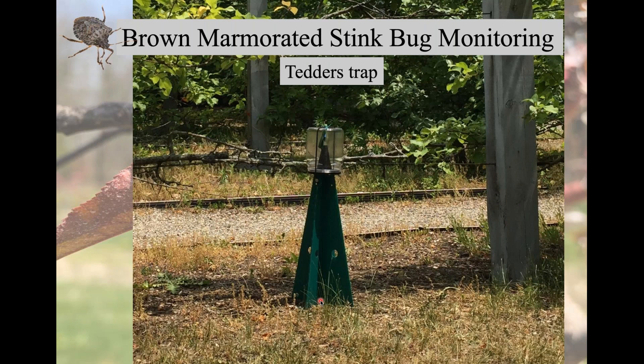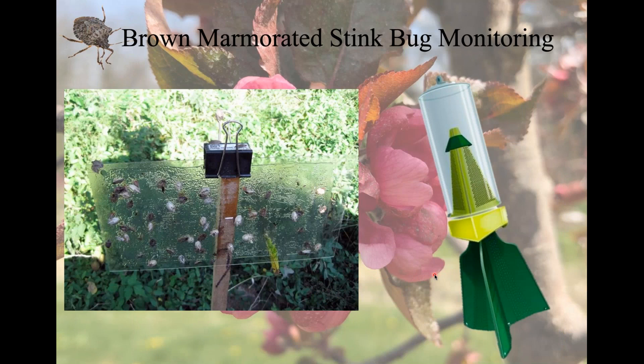The other available traps include the rocket trap, which is generally installed in the canopy itself, with flanges attached to branches to mimic the tree and draw the stink bug up into a canister. The nice thing about this one is there's no kill strip, but it hasn't been as effective. There's also a new sticky panel — just a sheet of plastic covered in sticky substance. You still use the aggregation pheromone, but you don't have to clean out the traps, which is much easier to deal with and people have been showing good success with it.